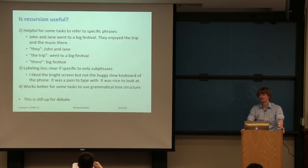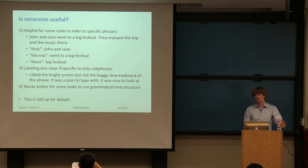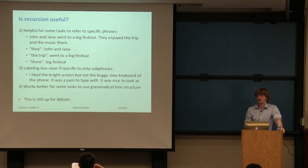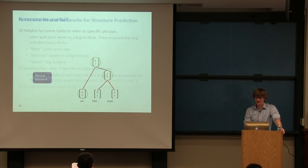The fourth argument is pragmatic — on some tasks, grammatical structures simply work better. This is an ongoing research area; perhaps very deep LSTM models could eventually handle everything without explicit trees. It's still up for debate and an active area of research. But on some standard benchmark datasets, recursive neural network models currently work best.